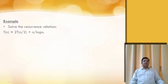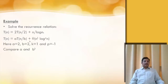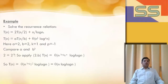Solve the recurrence relation T(n) = 2T(n/2) + n/log(n). Find the values: a = 2, b = 2, k = 1, and p = -1. Comparing a and b^k: 2 = 2^1, so apply formula 2b. According to this formula, T(n) = Θ(n · log base b of a · log log n). Substituting a and b, this becomes Θ(n log log n).